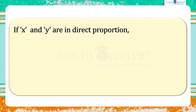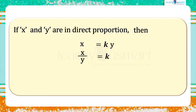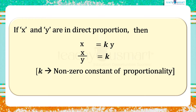If x and y are in direct proportion, then x equals ky, or x by y equals k, where k is a non-zero constant of proportionality. That is, x1 by y1 equals x2 by y2.